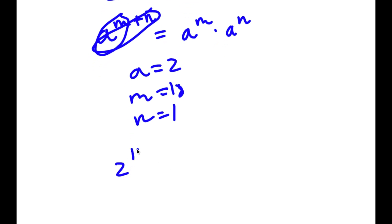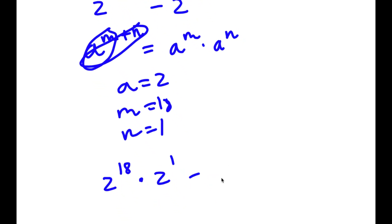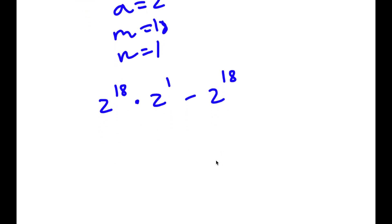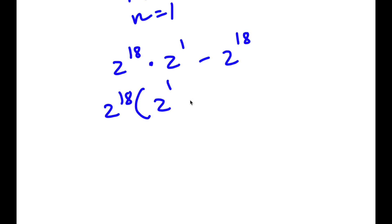So now I have 2 to the power of 18 times 2 to the power of 1, and I still have my minus 2 to the power of 18. Now I'm going to factor out 2 to the power of 18. When I do that, 2 to the power of 18 times 2 to the power of 1 divided by 2 to the power of 18 — those cancel out — so I'm simply left with 2 to the power of 1. And the minus 2 to the power of 18 divided by 2 to the power of 18 is simply just 1.